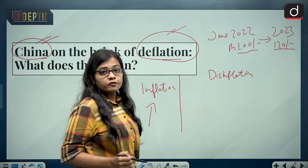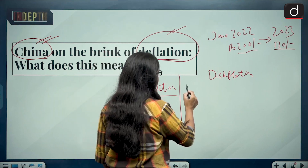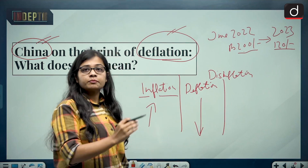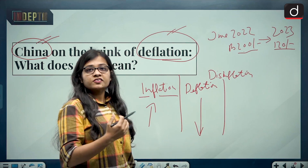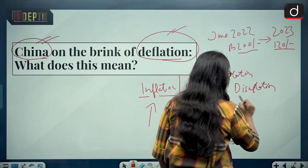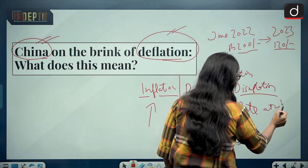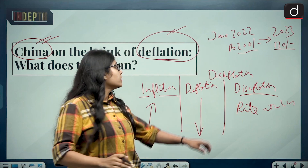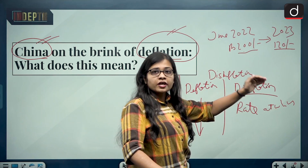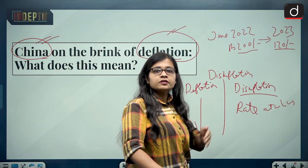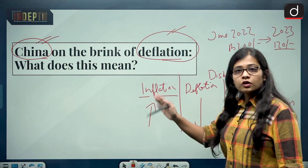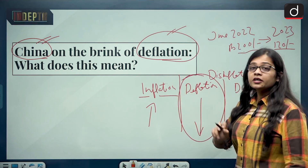First, inflation — increase in prices of goods and services. Second, deflation — the exact opposite, a decline in prices. Third, disinflation — the rate at which prices are declining. For example: June 200, July 195, August 190, September 185, October 180. That rate of decline is disinflation. Today we will focus on deflation, the opposite of inflation.